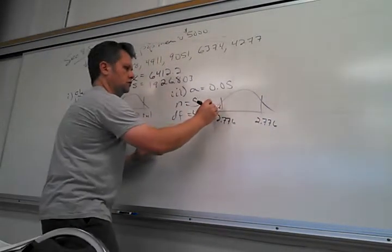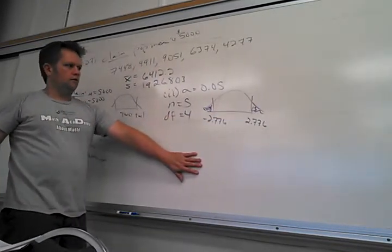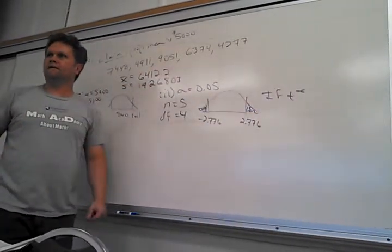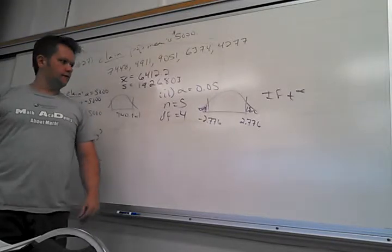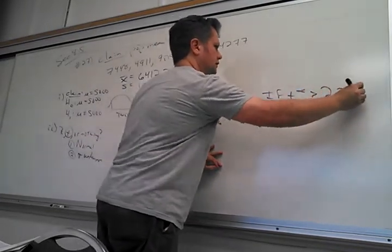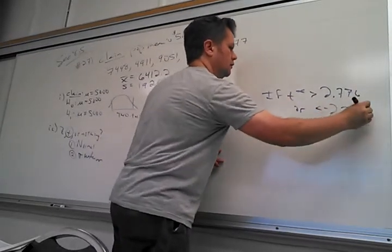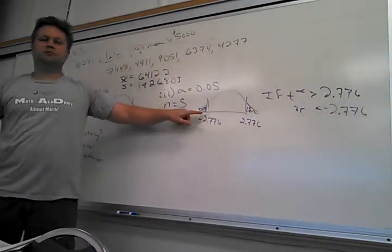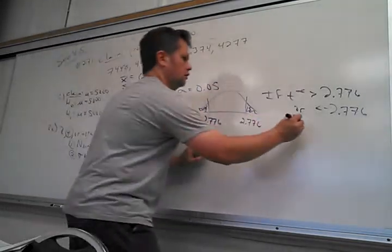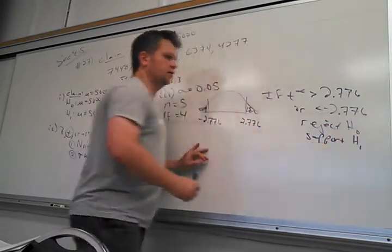So how do you say this in words? If T-star is greater than 2.776 or less than negative 2.776, we can reject the null. That's why we call it the rejection region — because if you get in there, you can reject the null, which also means you can support the alternative.